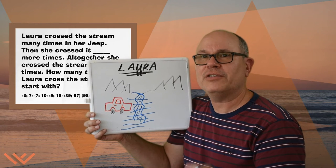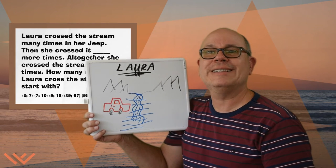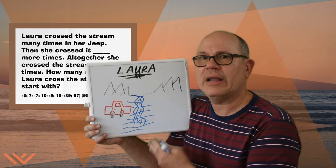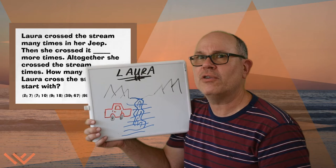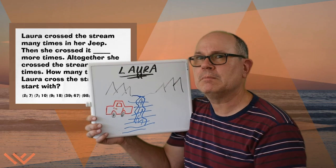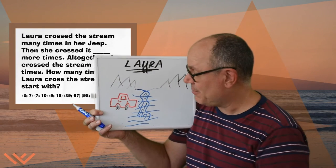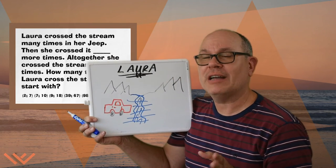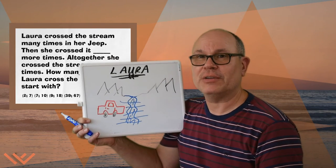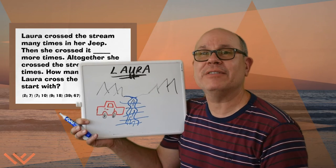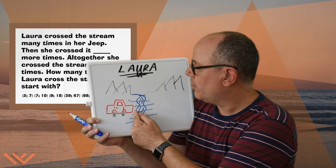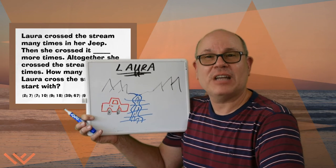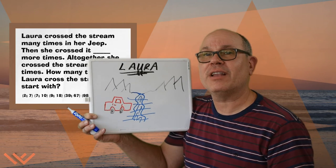But after she had crossed a few, she had crossed it two more times. How would you figure out how many times she crossed before she did those last two crossings? Let's erase a couple of these lines — one, two. Those are the times she crossed after she crossed a bunch of times to come up with seven. So now there's one, two, three, four, five. She crossed the stream in her Jeep five times before she crossed it the last two times.